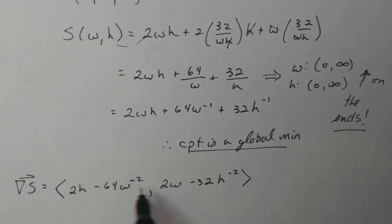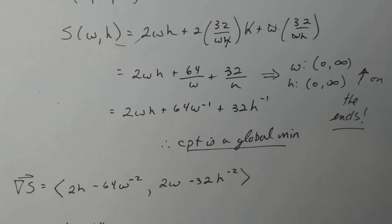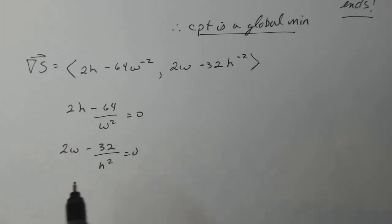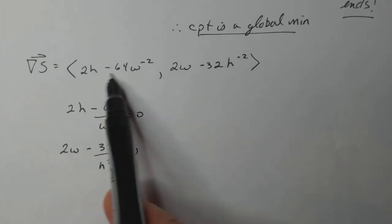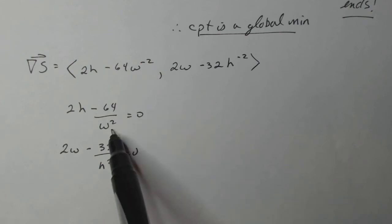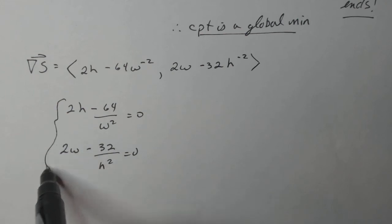If I'm going to set this equal to zero, I'm going to get rid of those negative exponents. So I have 2H minus 64 over W squared equals zero, and 2W minus 32 over H squared equals zero. That's the system we have to solve.